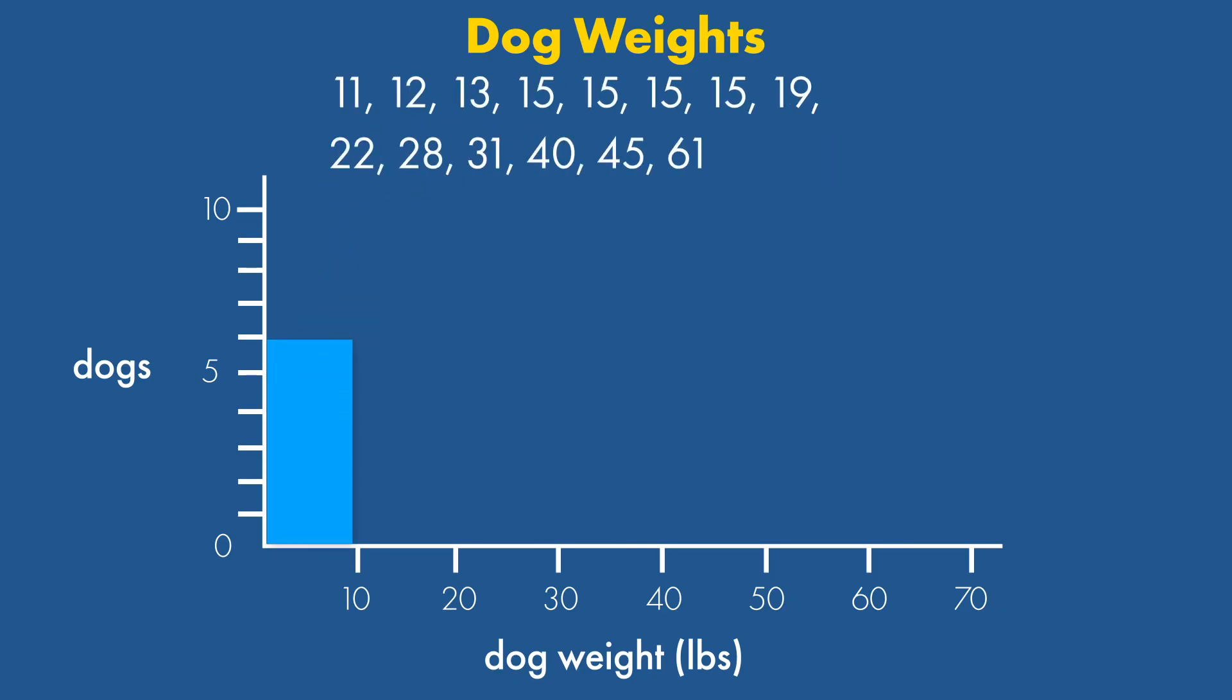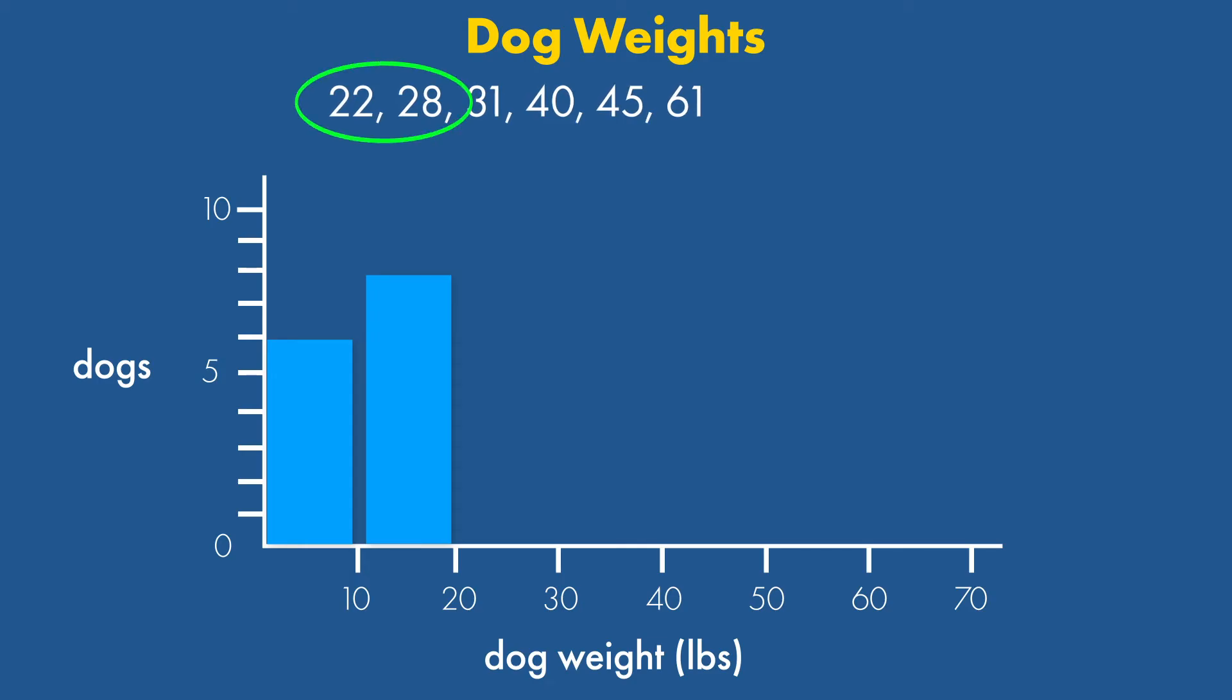Next, count how many dogs are in the 10 to 20-pound bin. There are 8 dogs in this range. So, the 10 to 20-pound bar has a height of 8. There are only two dogs in the 20 to 30-pound range, so that bar has a height of 2.